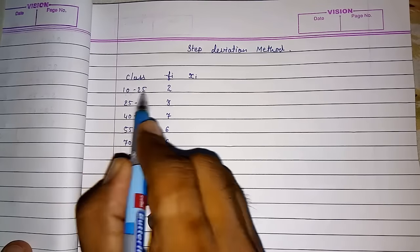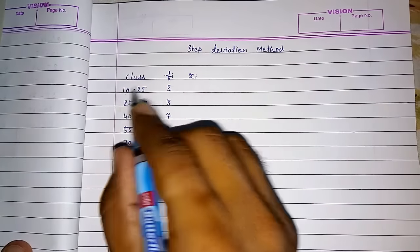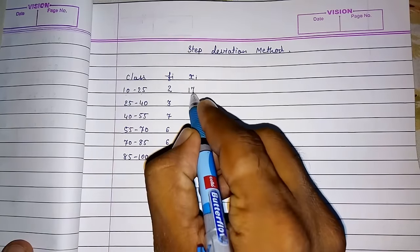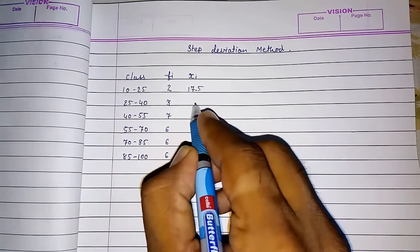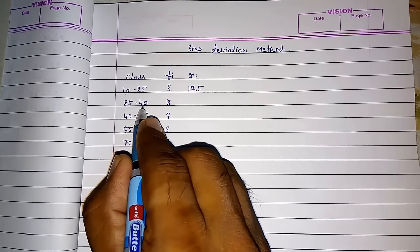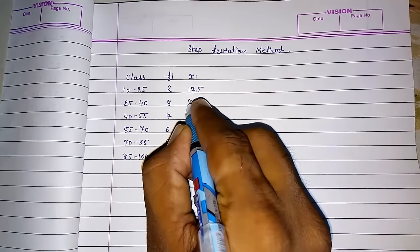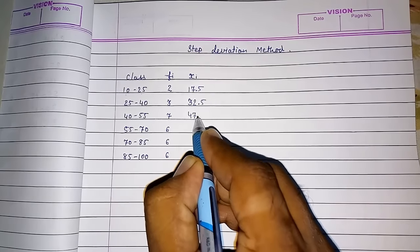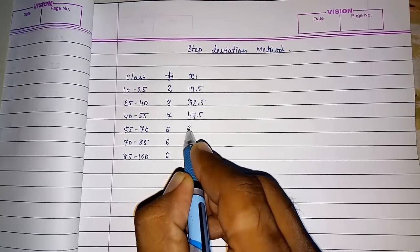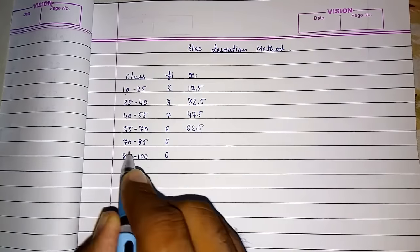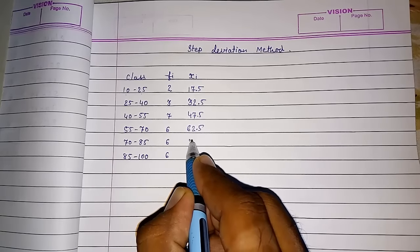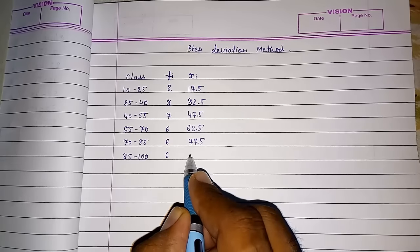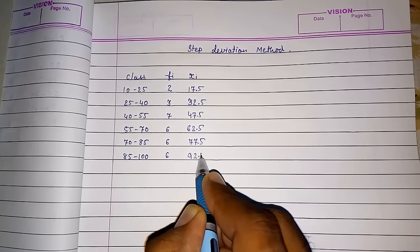Now 10 and 25 midpoint of this that is called class mark also and midpoint addition of these two 35 divided by 2 you will get 17.5. And so on addition of this two and divide by 2 you will get 32.5. This 47.5. Then 62.5. Then it's 77.5. And addition of this two and divide by 2 so it will be 92.5.